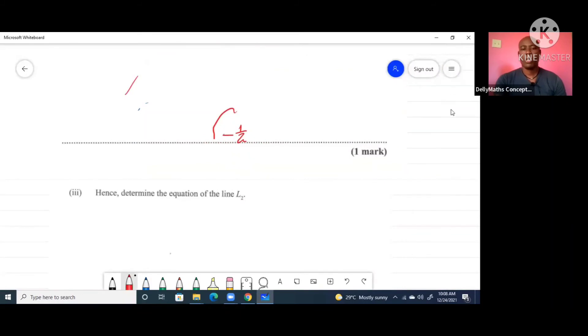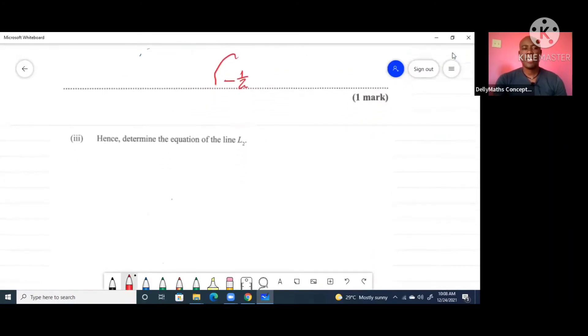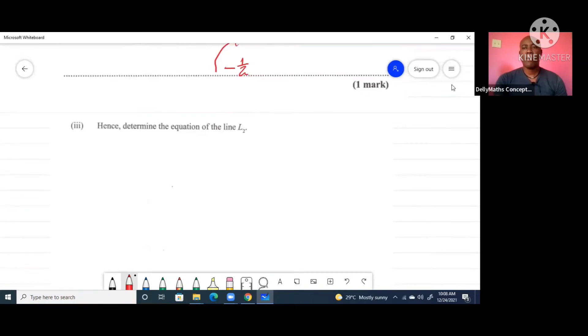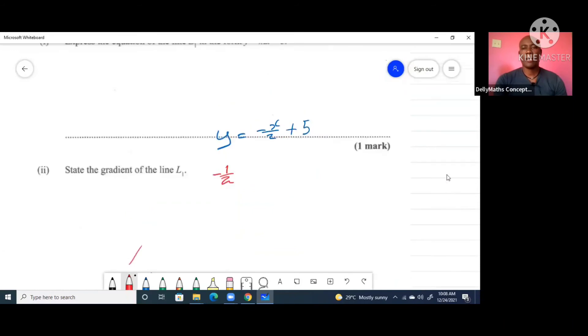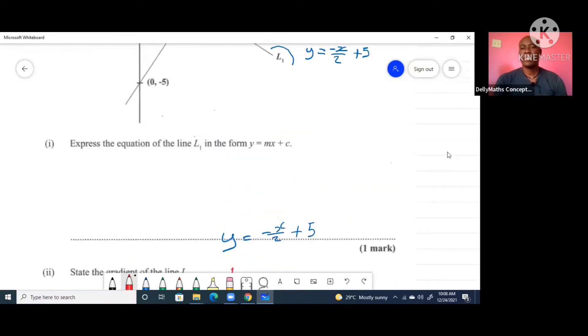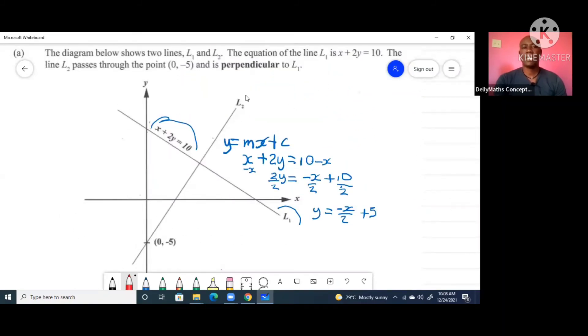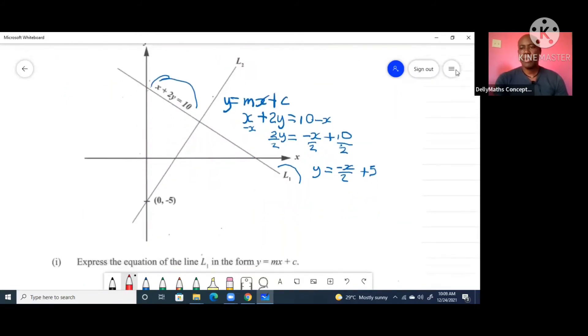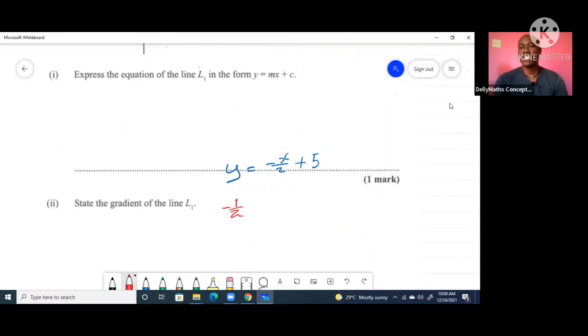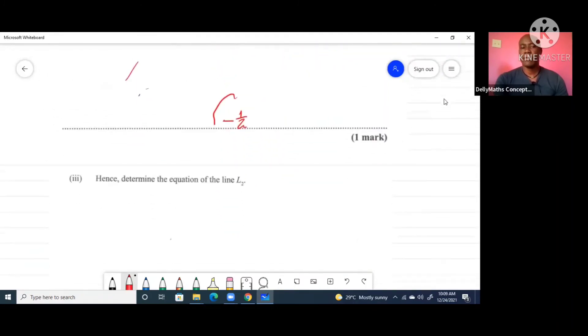Going down further, it says hence determine the equation of line two. Remember from the top, the narrative was suggesting that the two lines are perpendicular - line one is perpendicular to line two. And we were given the fact that line two passes through (0, -5). When lines are perpendicular their gradient will share a special relationship.